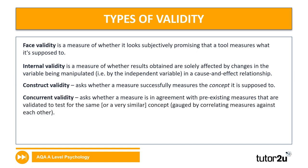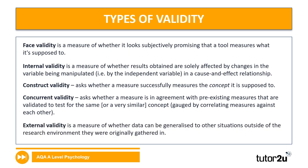Concurrent validity is usually used when you've got an assessment of something that's relatively new. To test whether or not that measure is valid, I can look at that measure against a pre-existing measure that I know is valid, to test essentially that I get the same results. External validity is about the ability to generalize my findings beyond the research setting itself.